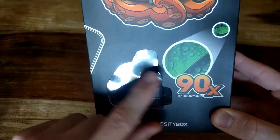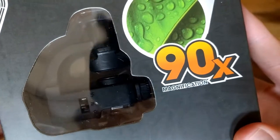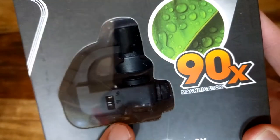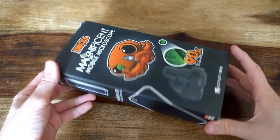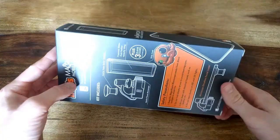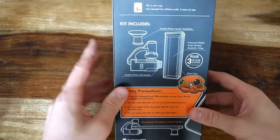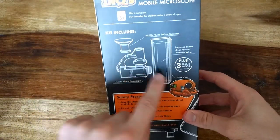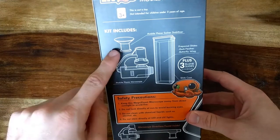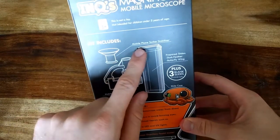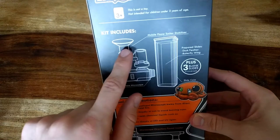This is actually the microscope itself. The package, as you can see, it's pretty cool, and it includes three pieces. This is the microscope itself, this is the mobile phone sucker stabilizer, and I'll show you later what it does.